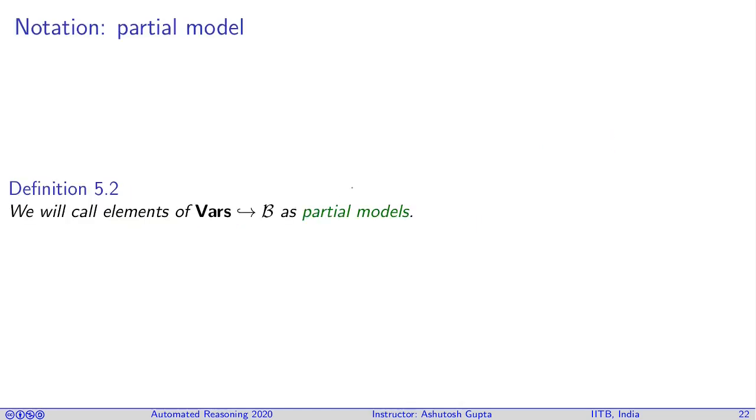In this method we will assign variables one after another and therefore we need a concept of partial assignment. It means that not all variables are assigned at some given moment of the algorithm, and some variables are assigned true or false and some variables remain unassigned.